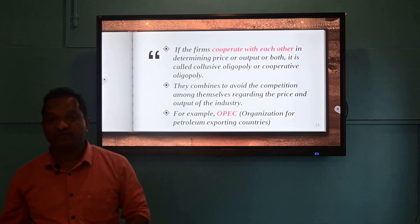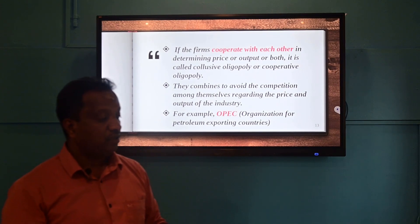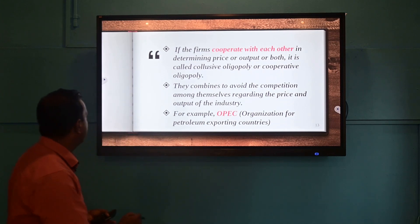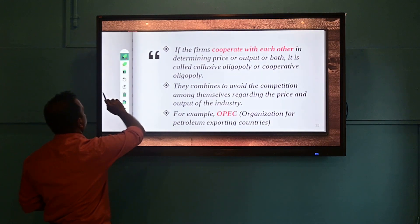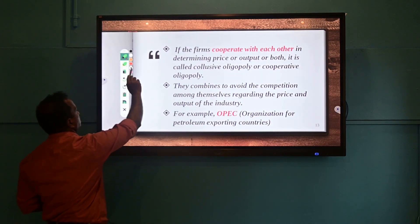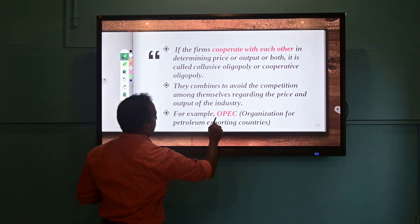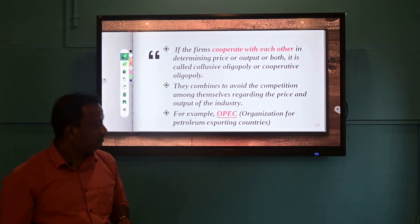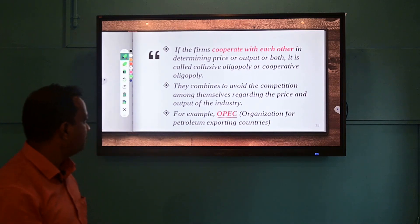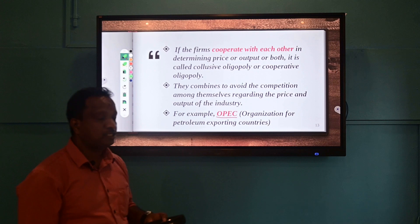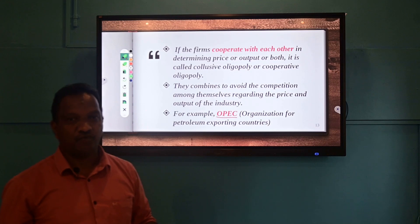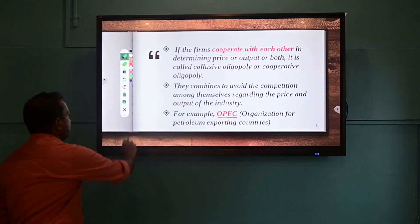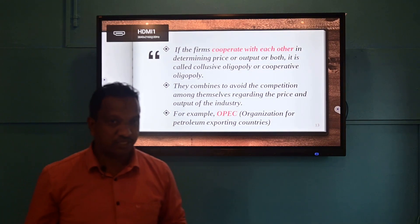For example, in the case of the modern market economy, we come across OPEC — the Organization of Petroleum Exporting Countries. This organization is really controlling the market for petroleum. It is on the basis of these collusions that they are successful in implementing market control policies.